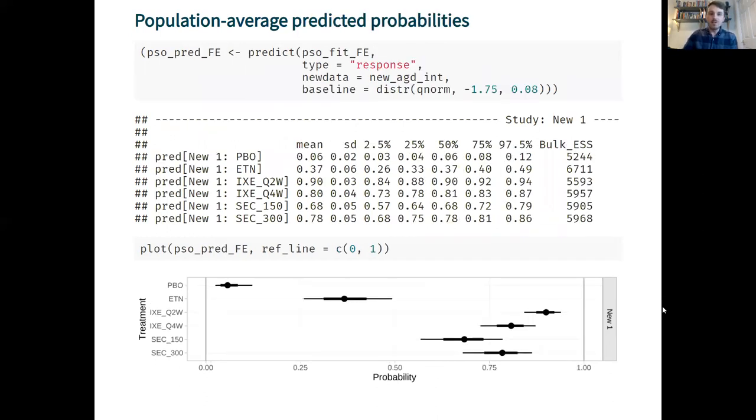Very similarly for the population average predicted probabilities using the predict function. This time I'm also specifying a baseline distribution on the baseline probit probability of response and then again I can plot these.